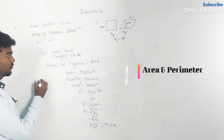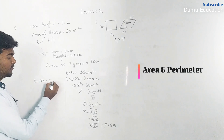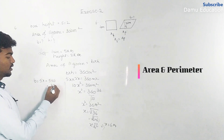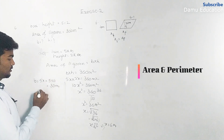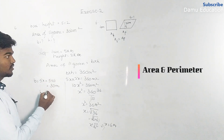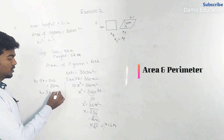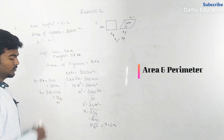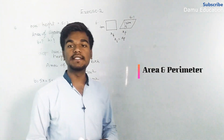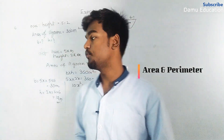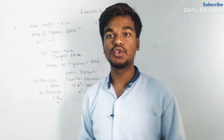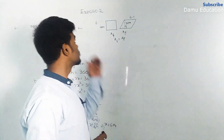So the base equals 5x, that is 5 into 6, which is 30 meters. The height equals 2x, that is 2 into 6, which is 12 meters. Those are the base and height using the ratio 5:2.